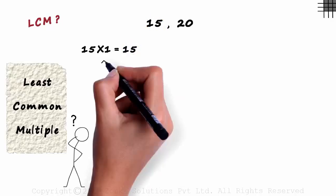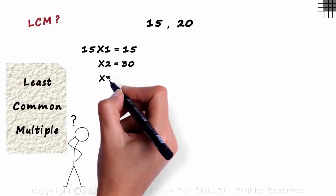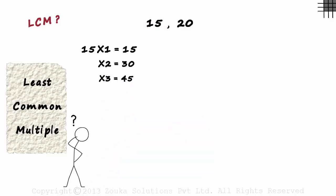15 multiplied by 2 equals 30. 30 is also one of the multiples of 15. 15 multiplied by 3 equals 45, which is also a multiple of 15. Remember, a number has infinite multiples.